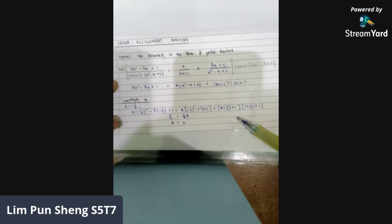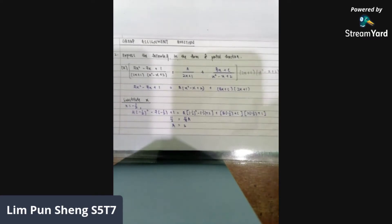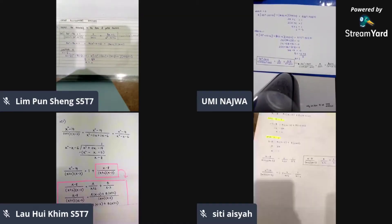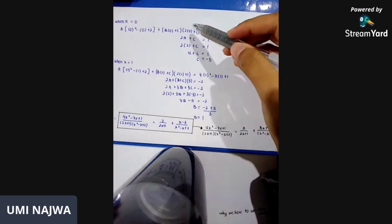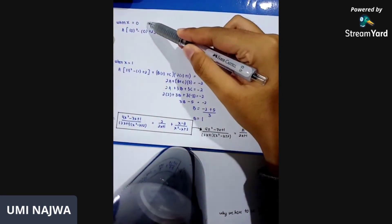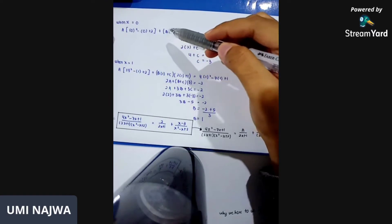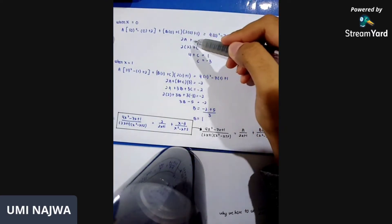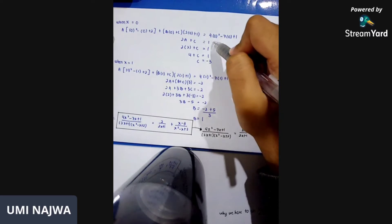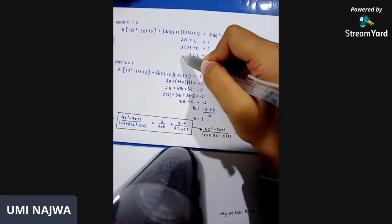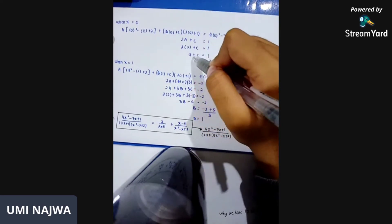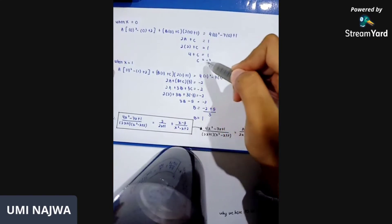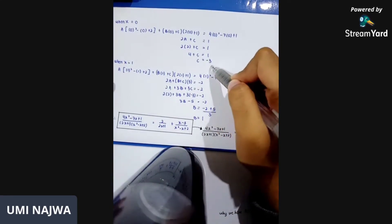For the second part of question 2a, I'll pass it to my group member, Umi Najwa. Since Punsheng already obtained the value of a, I will find the values of b and c. I choose x equals 0 and substitute it into the equation. We get 2a plus c equals 1. Since we already have a, we replace it: 2 multiplied by 2 gives 4, plus c equals 1. So the value of c is negative 3.